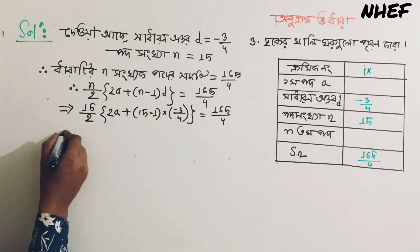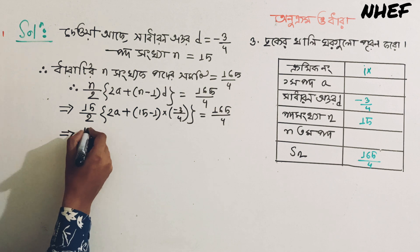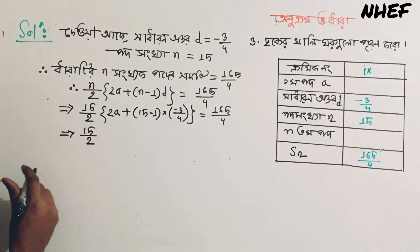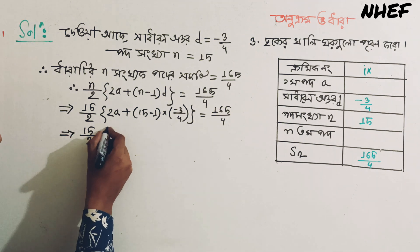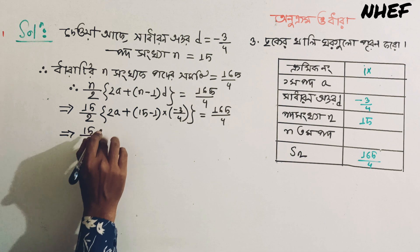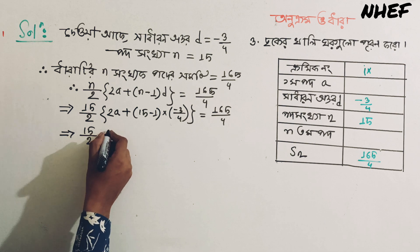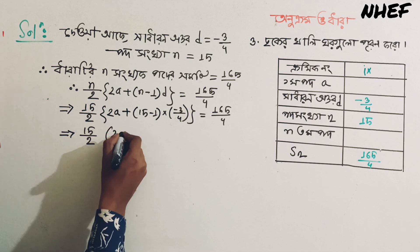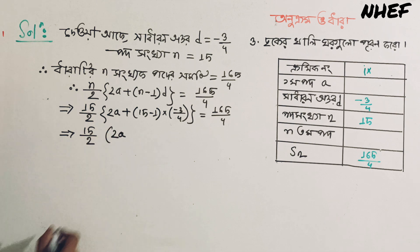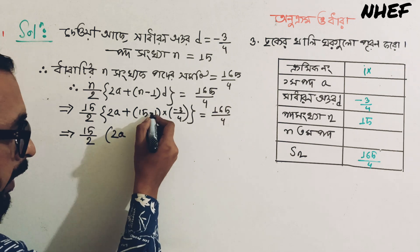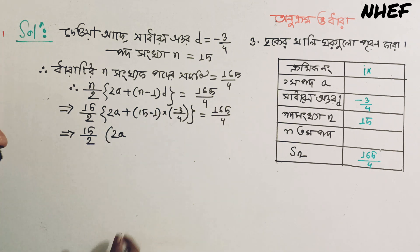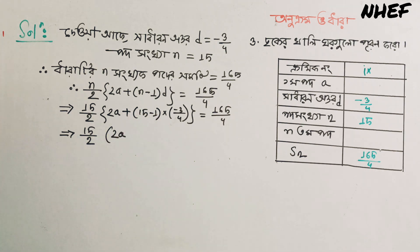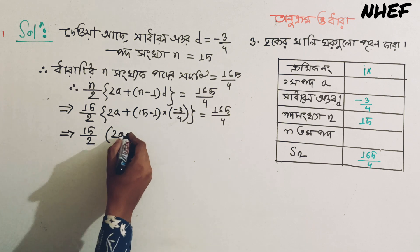Now we calculate here. That gives us 15 divided by 2, twice a. From 15, if we subtract 1 we get 14. Right, from 15 subtract 1 gives 14. Right.